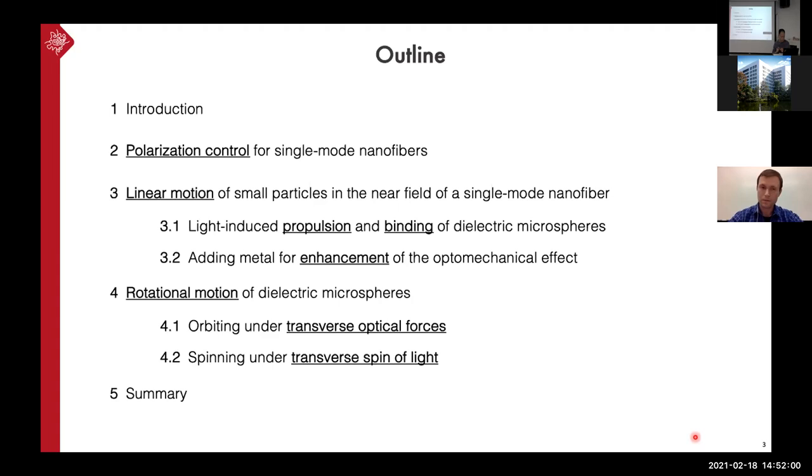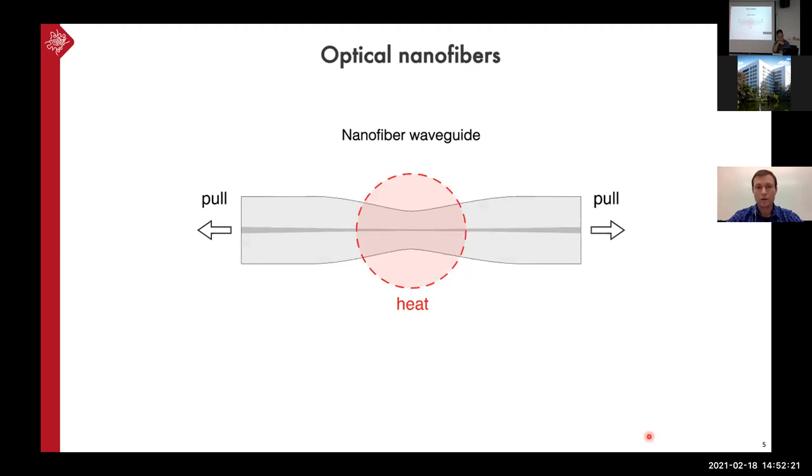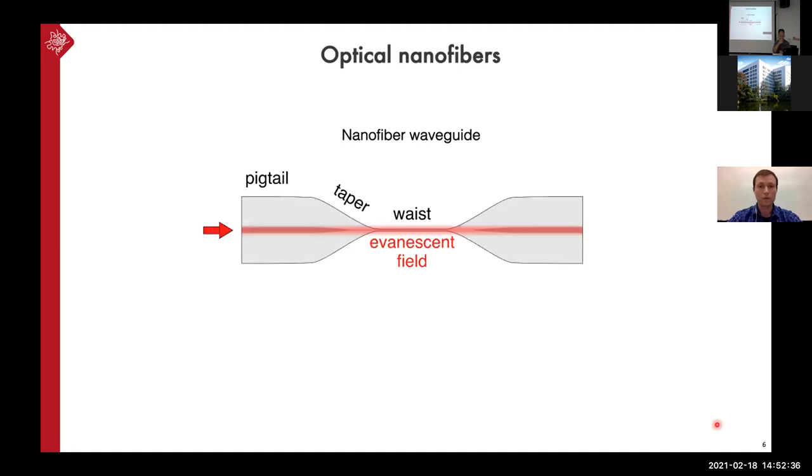So first of all, what is an optical nanofiber? It is a cylindrical waveguide which is produced from a common step-index optical fiber where the light is transmitted in the form of the guided modes. And we take such a fiber and apply some local heating and simultaneously we pull the fiber in both directions until the fiber, the heated region gets thinner and it acquires the ultra thin sub-wavelength diameter. And the main feature of the field which is transferred by such a fiber, it's that it has this strong evanescent field which doesn't propagate in the transverse direction but it has quite high intensity and gradients which is useful for our studies.